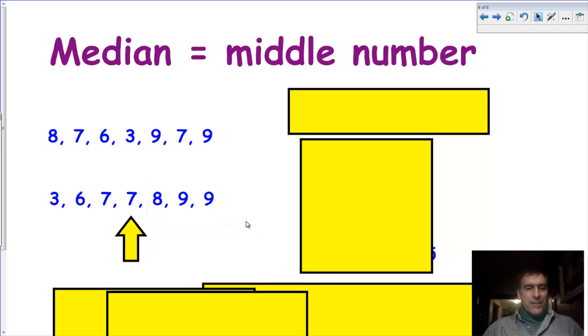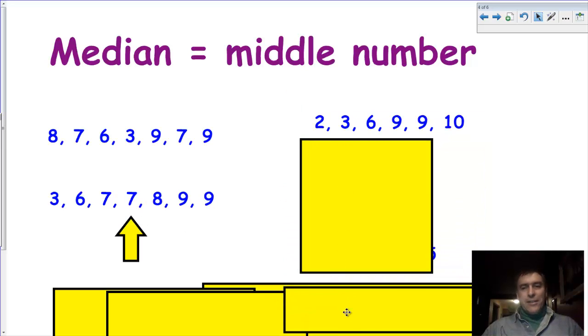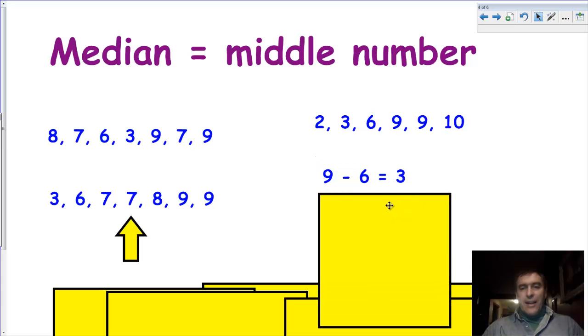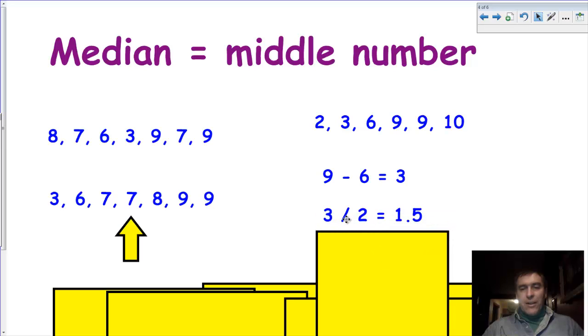Well, what happens if there isn't a middle number? Let's take a look at this data here. You've got 2, 3, 6, 9, 9, 10. So I've already got them in order from smallest to biggest. But if we take 2 off the one side and 2 off the other, we've got 2 middle numbers. What does that mean? Well, what we have to do is you basically take those two middle numbers, 9 and 6, and you subtract them. So 9 minus 6 is equal to 3. Then you take what's left, this 3, and divide it by 2. That gives you 1 and a half. So then what that tells you is that the median is equal to 1 and a half more than the 6, or 1 and a half less than the 9. So if you can't figure out exactly what the middle number is, then this is how you would do it. Subtract the 2, divide it by 2, and find out what the difference is, and then figure it out.